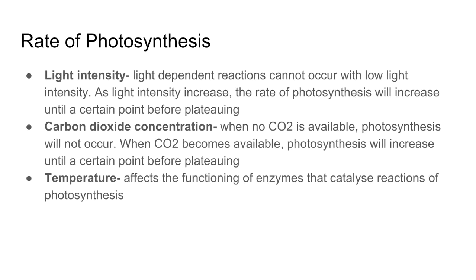There are some factors which affect the rate of photosynthesis. First, light intensity: in low light, the light-dependent reactions cannot occur, but as light intensity increases, the rate of photosynthesis will increase, only up to a certain point. Second, carbon dioxide concentration: when there is no carbon dioxide available, photosynthesis cannot occur, but it increases up to a certain point when CO2 becomes available. Third, temperature, which affects the functioning of the enzymes that catalyze the reactions of photosynthesis, playing an important role in the rate.